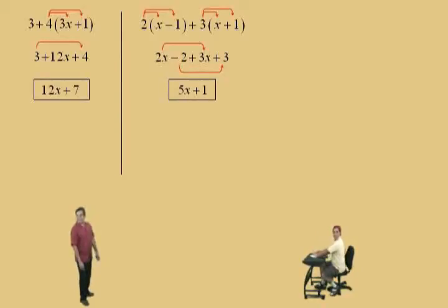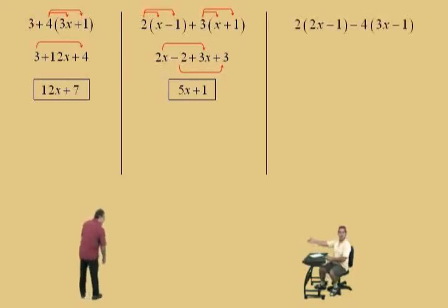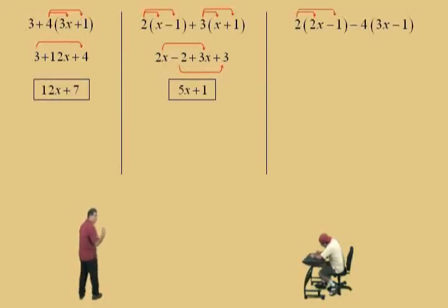Let's do another one. Here we go, Charlie. Now, don't get scared. We're going to do the same procedure that we've been using. We're going to take the 2 times the 2x and the 2 times the negative 1. And the negative 4 times the 3x and the negative 4 times the negative 1. Okay, now, Charlie. 2 times 2x is 4x. Now, 2 times the negative 1 is negative 2.